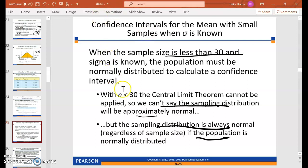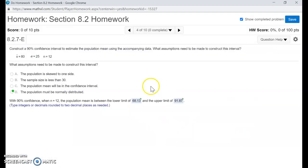When n is less than 30, the central limit theorem cannot be applied. So we can't say the sampling distribution will approximately be normal. So we can't say that here.